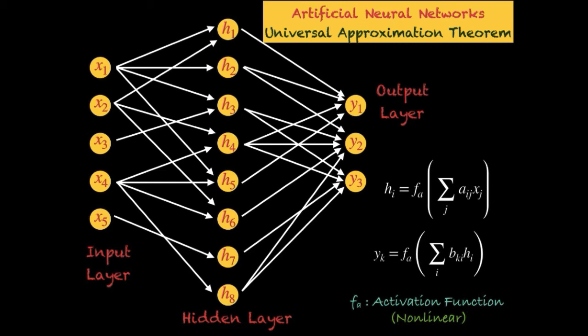If we initialize the ANN with some random values for a_ij and b_ki, substitute the input layer parameters, and calculate the output layer values, we can then compare these obtained output values with what the output should actually be from the dataset. This gives us the error between the predicted value and the true value. Using this error, back propagation updates the coefficients a_ij and b_ki sequentially from the output layer back toward the input layer, and this process repeats until the parameters are correctly estimated.